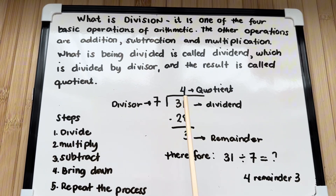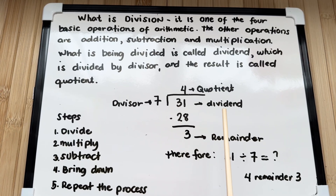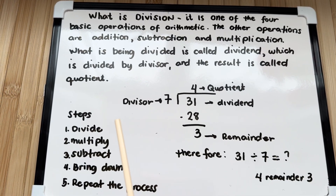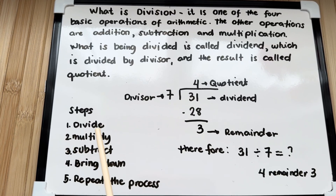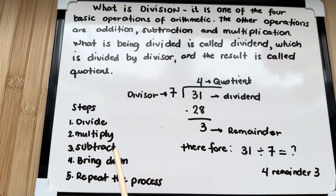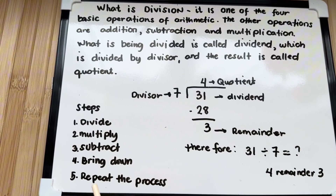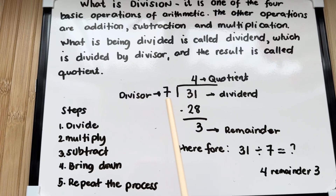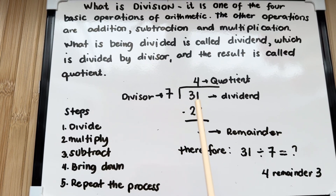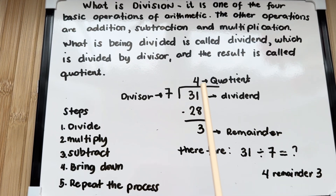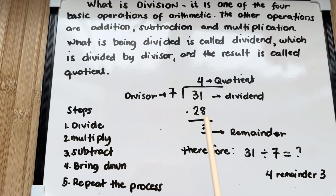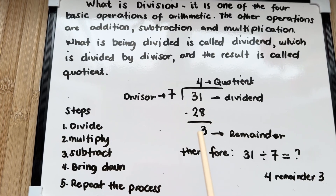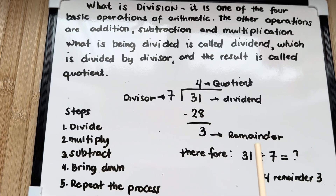Here, 7 is the divisor and 4 is the quotient. 31 is the dividend and 3 is the remainder. Let's try to divide 31 by 7. First, we divide, then we multiply, then we subtract, then we bring down and repeat the process. Let's check out the example: 31 divided by 7. How many 7s in 31? Let's try 4. Then multiply: 4 times 7 is equals to 28. Then subtract: 31 minus 28 is equals to 3, and 3 is the remainder.